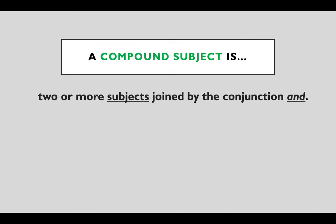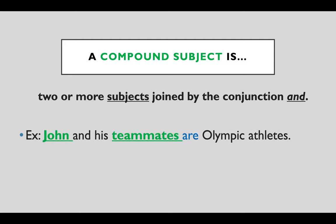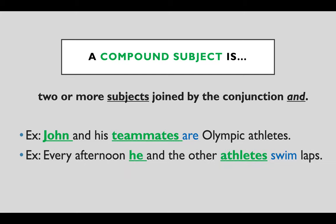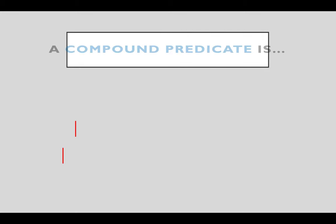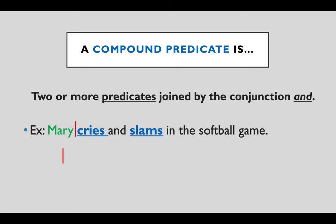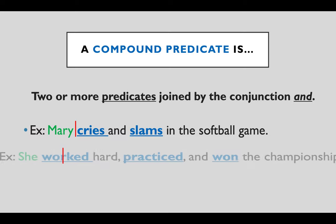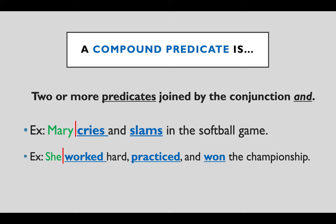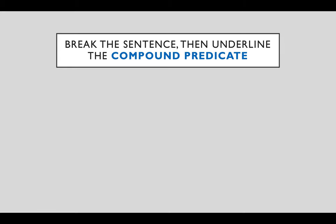A compound subject is two or more subjects joined by a conjunction, like and. Example: John and his teammates are Olympic athletes. Every afternoon he and the other athletes swim laps. A compound predicate is two or more predicates joined by the conjunction and. Example: Mary cries and slams in the softball game. She worked hard, practiced, and won the championship. Now break the sentence and underline the compound predicates.